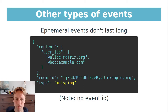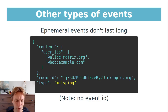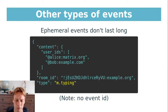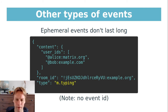Ephemeral events are things that happen at a particular moment but if you come in later you don't even care about them — unlike state events. An example is m.typing: when someone is typing, a typing event is sent with a list of all people currently typing. If you come along later, you really don't want to see who was typing at a particular time. Ephemeral events don't have an event ID, don't end up in the timeline, and just get sent to you at the time if you're interested.